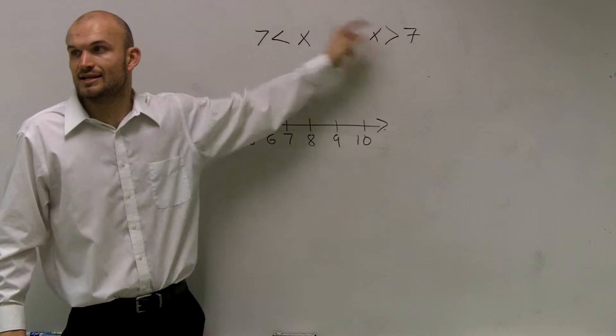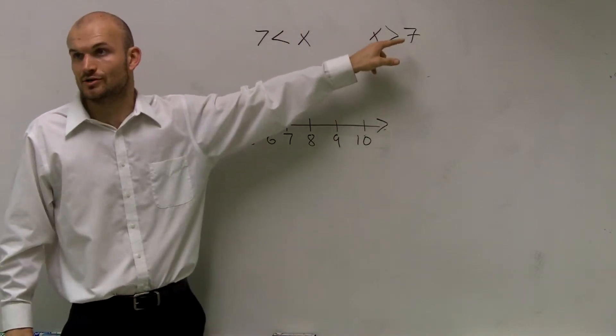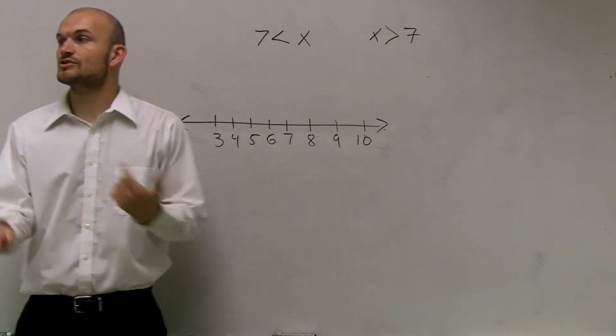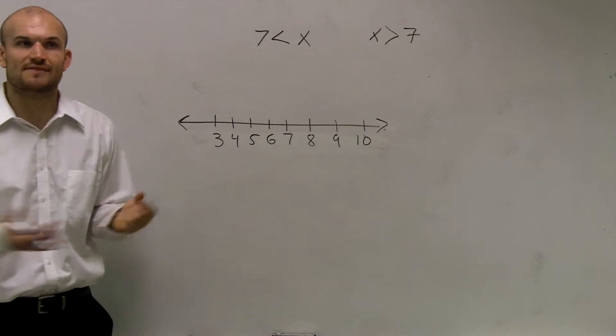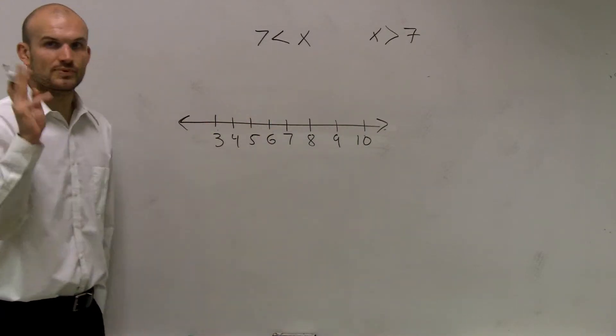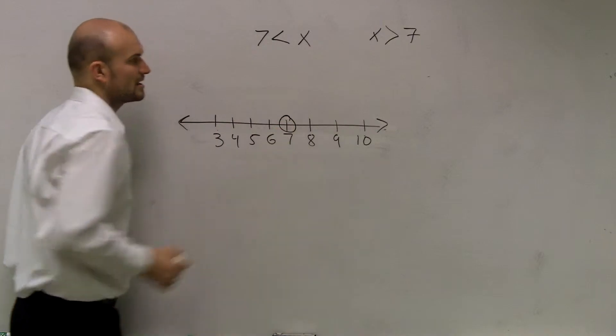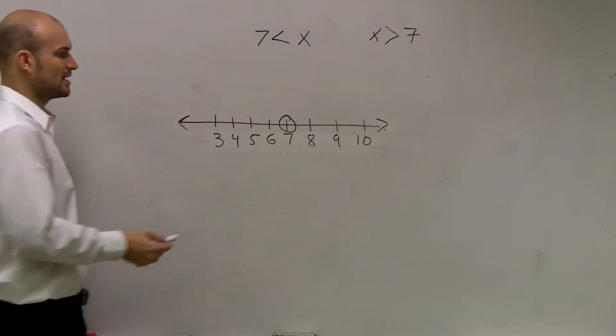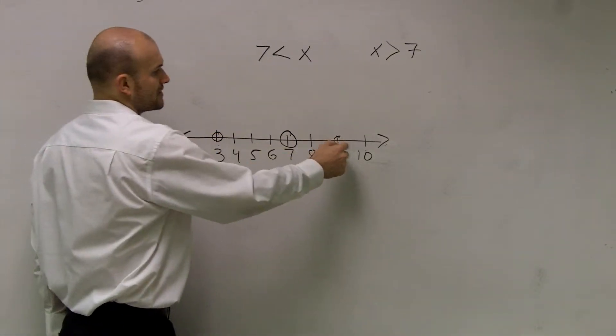Because now you can see, oh, the inequality sign goes to the right, that means my graph has to go to the right. However, I also just want to prove to you guys that you don't always have to follow that rule. Now, our three steps: first, find your point, 7. I make a big circle. Then I pick a point to the left, and I pick a point to the right.